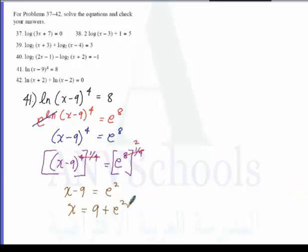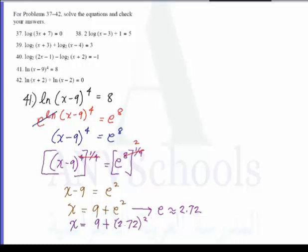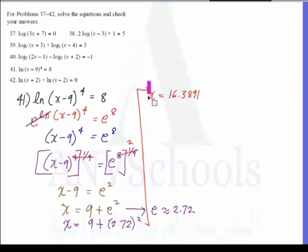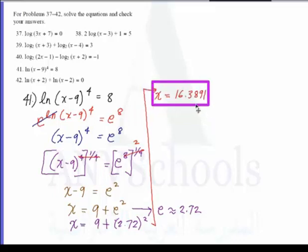The value of e is approximately 2.72, so x is approximately 9 plus 2.72 squared. Using a calculator, x equals approximately 16.3891, rounded to the nearest ten-thousandth.